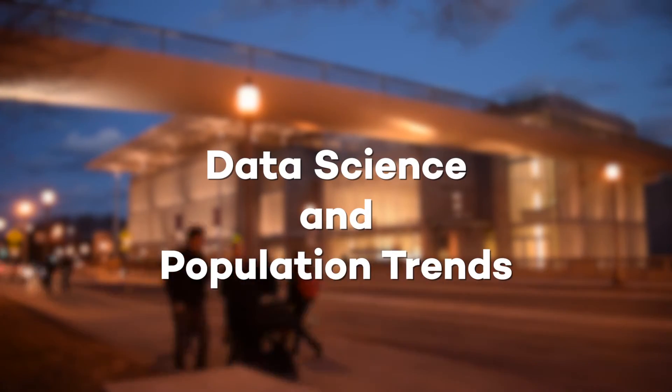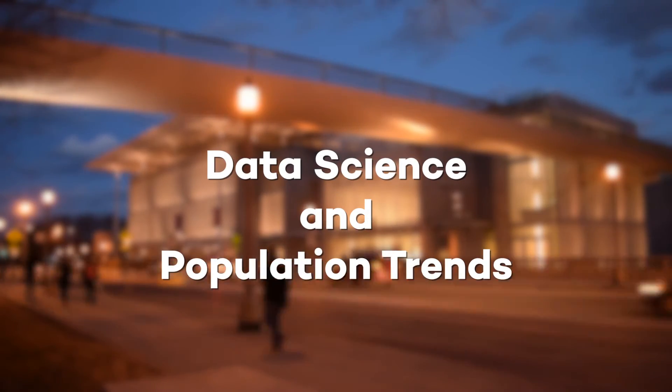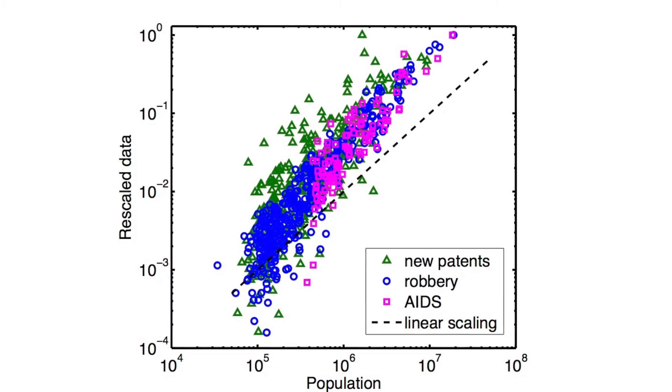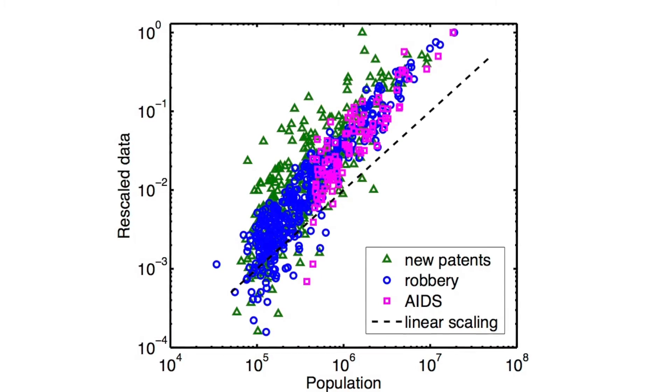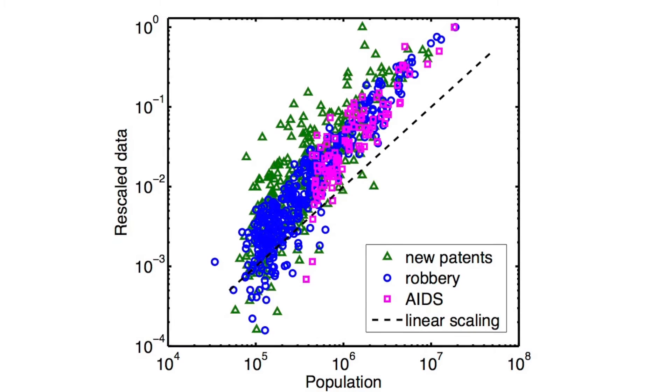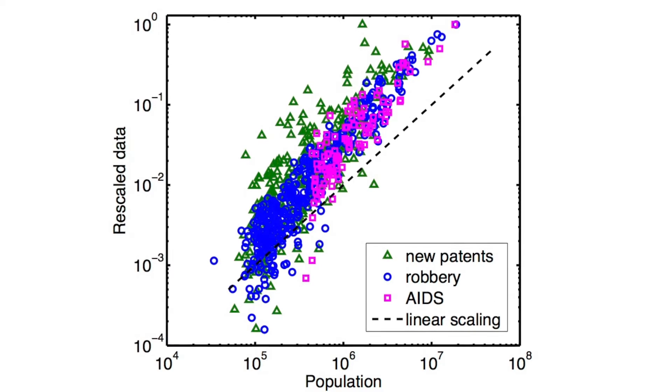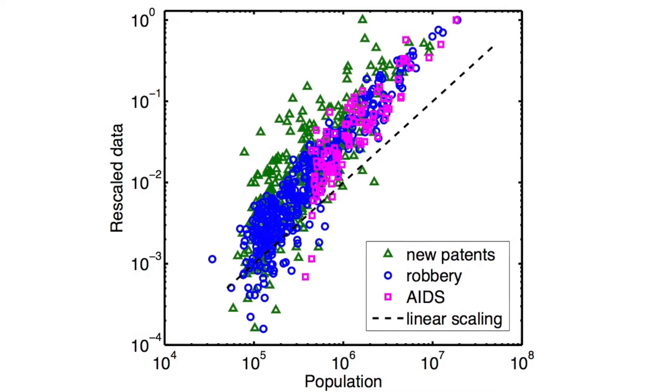In my work, I majorly use crime data. We are interested in answering why, in bigger cities, people are more likely to generate new patents, more likely to commit a crime, and more susceptible to contagious disease at the same time. As cities get bigger, you are both more productive and more dangerous at the same time.